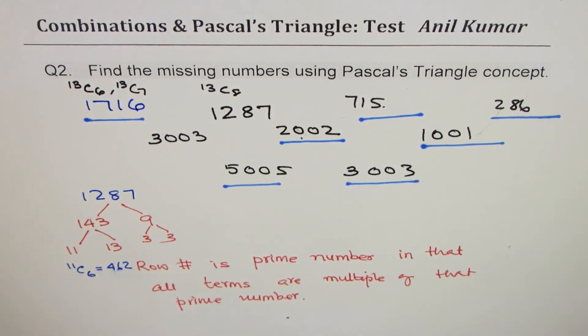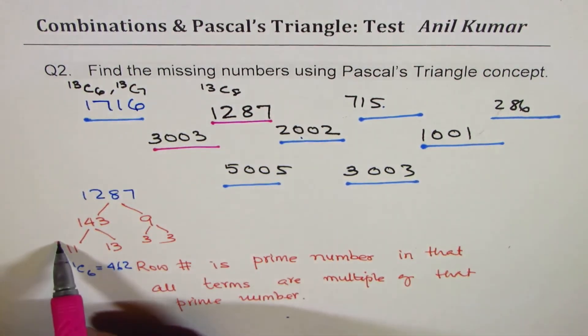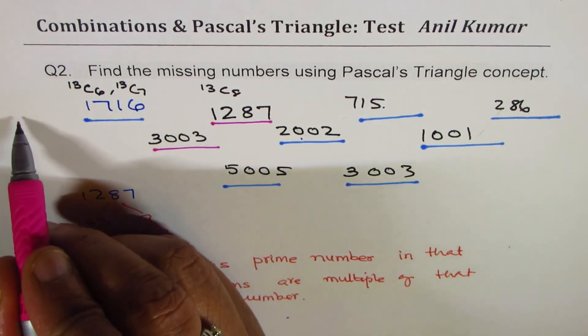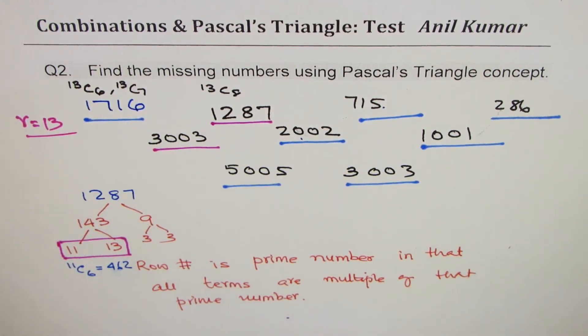So I hope you understand that if there is a difficult situation as we were in with just two numbers given to us, we have to look for prime factors and figure out which row we are talking about. So this is row number 13, which gave us the result.